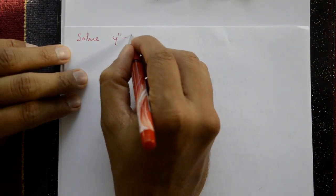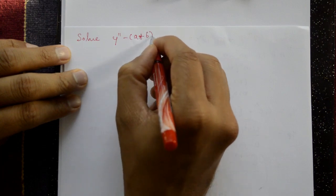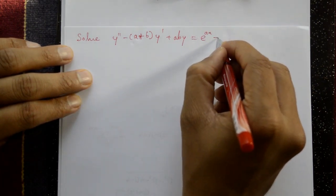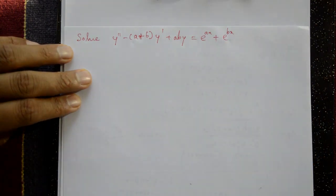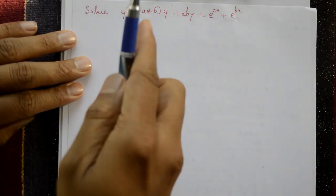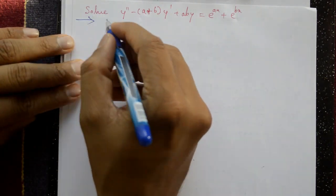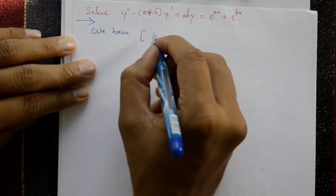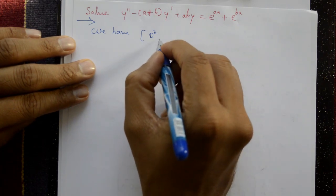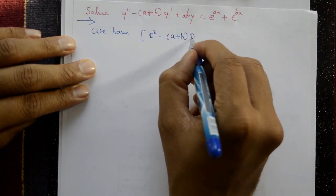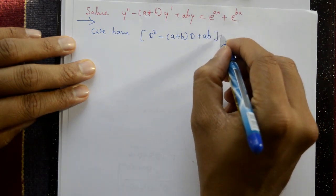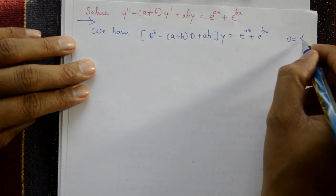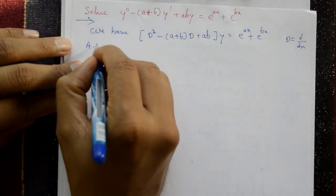Next example: solve y'' - (a+b)y' + ab·y = e^(ax) + e^(bx). Rewriting using D: [D² - (a+b)D + ab]y = e^(ax) + e^(bx), where D = d/dx.